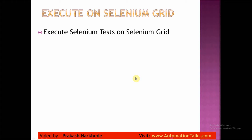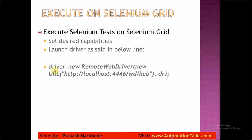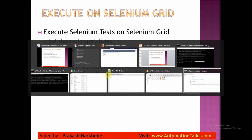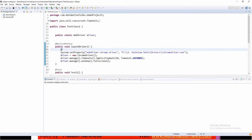Let us execute the test cases on Selenium Grid. We are done with the Selenium Grid setup, and now let us do the test execution. The hub will be selecting the OS and browser based on the desired capabilities which we are setting. The very first step would be setting desired capabilities, and then we need to launch the browsers. Let me go to my project — here is the sample project I had created.